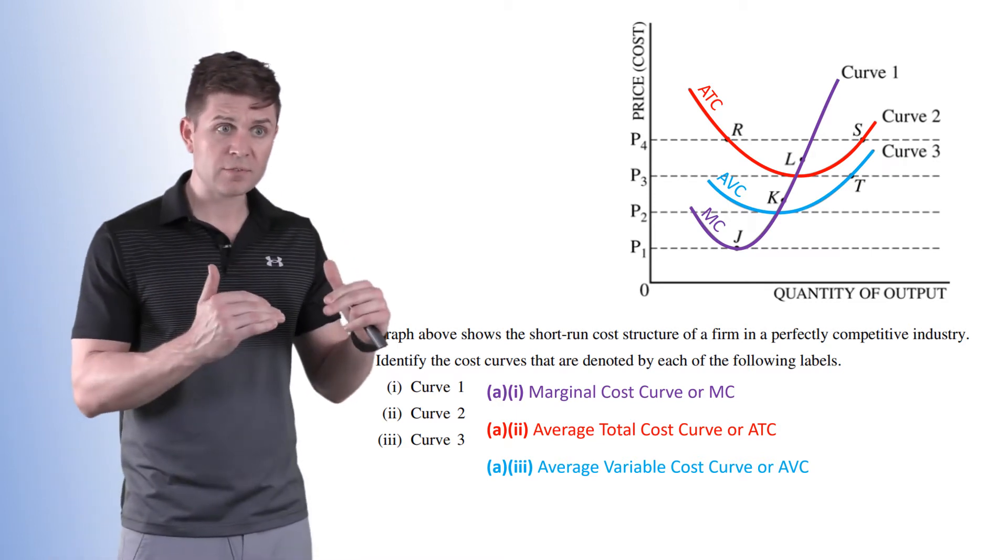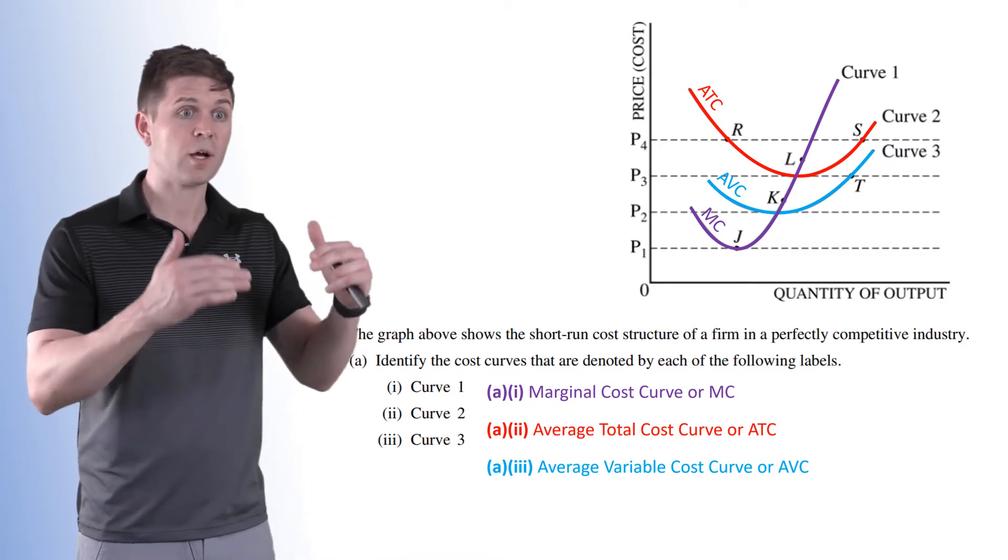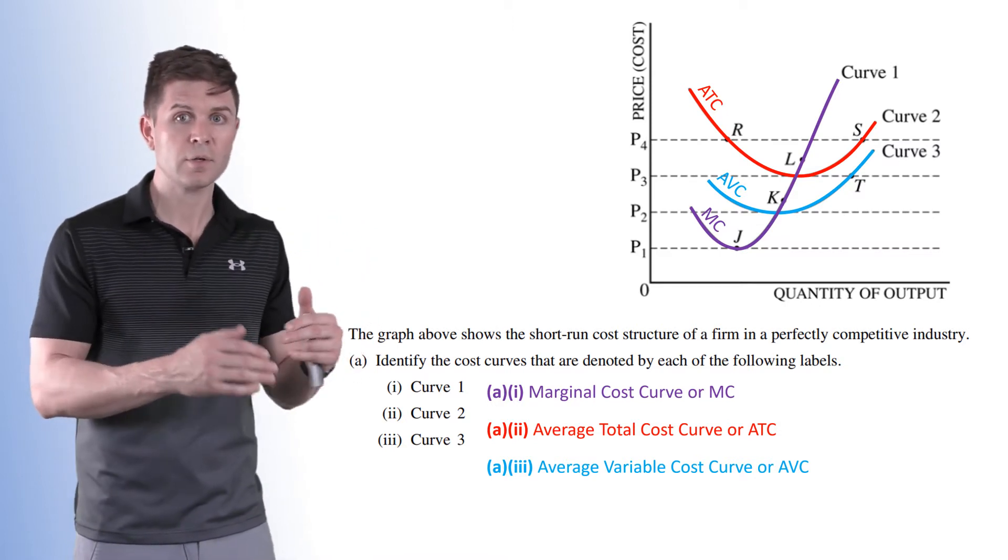We know that the AVC is going to sit lower than the average total cost, because average total cost comes from the average fixed cost plus the average variable cost.